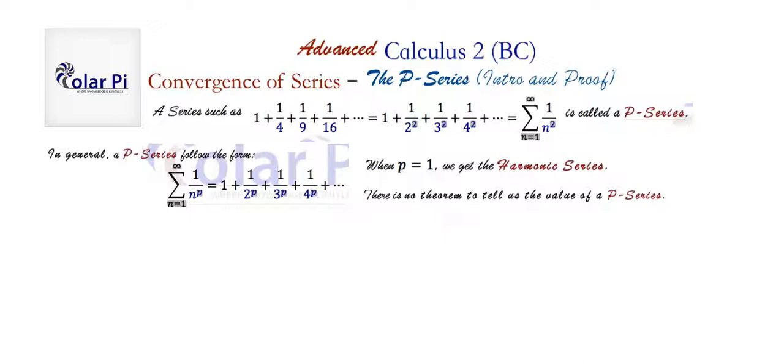Now, unfortunately, there is no way for us to just tell the value of a certain P series. But we know, for example, that when P is equal to 2, that is when we have this infinite sum, the infinite sum is equal to pi squared over 6.